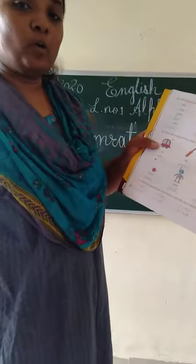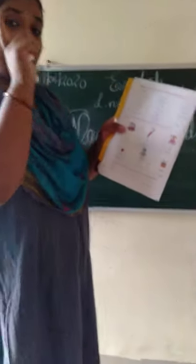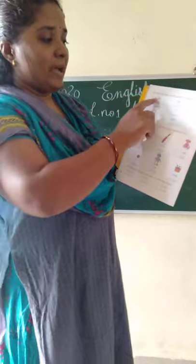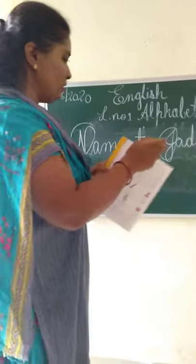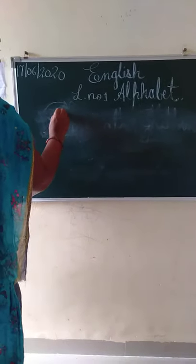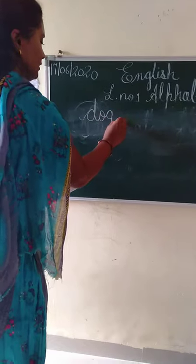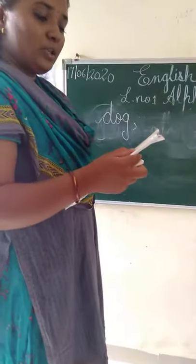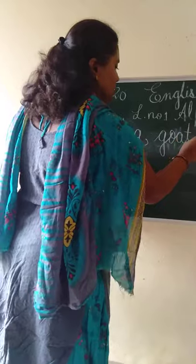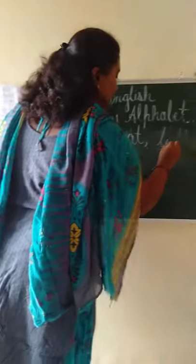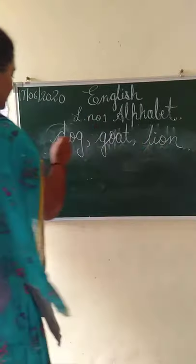We have to write these animals in alphabetical order by looking at the first letter. D comes before G and L, so dog comes first. Then G comes next, so goat is second. And the last word remaining is lion. Dog, goat, lion — that is the first set done.